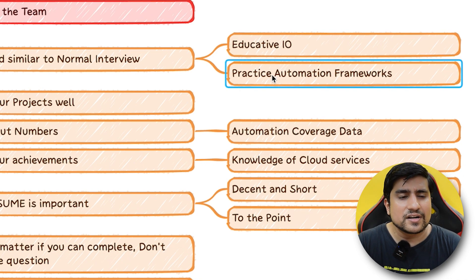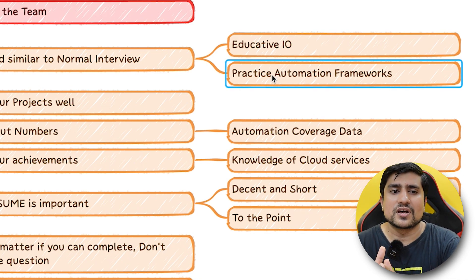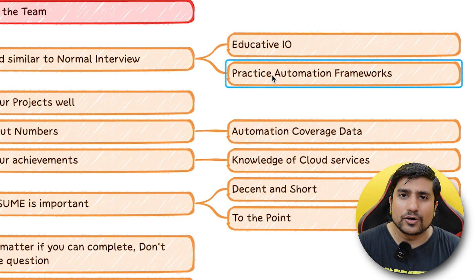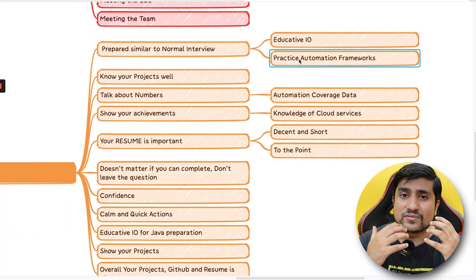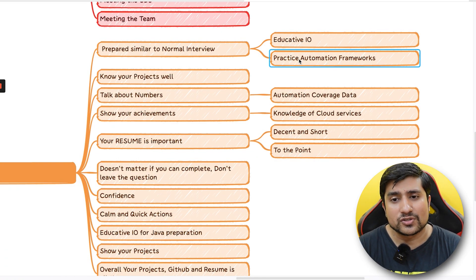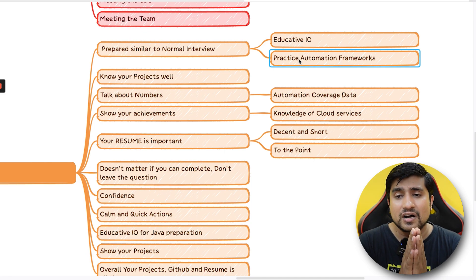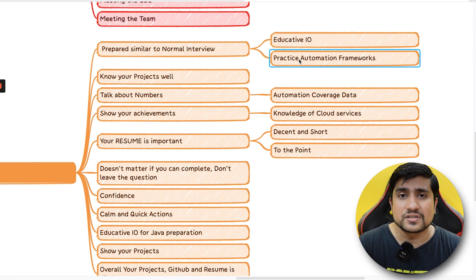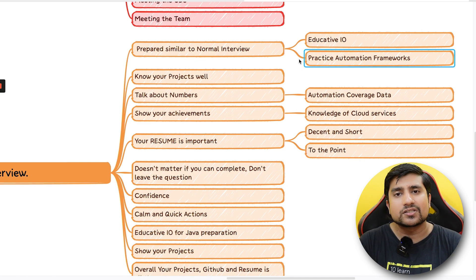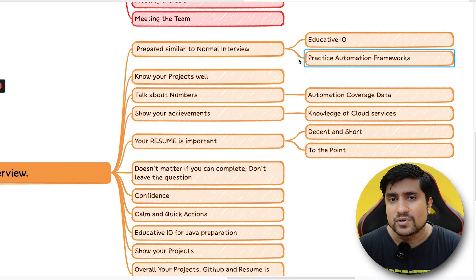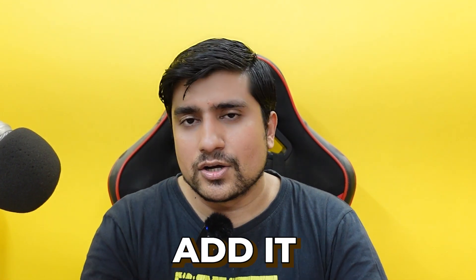Practice the automation framework. I know there are people who say that with one, two, or three years of experience nobody will ask automation questions — this is not true. There are still people who ask automation framework questions even at one or two years of experience. This was an interview for a QA role. Make sure you have automation framework knowledge and create it from scratch. Watch the Testing Academy YouTube channel where I've discussed how to create your own custom frameworks.